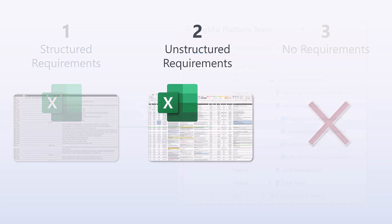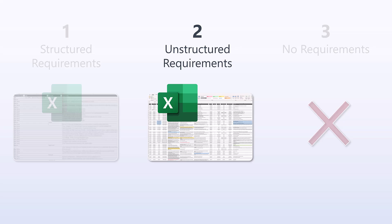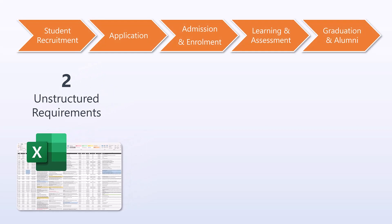Scenario number two is a little bit more complex. It's about a list of requirements you have received from your clients where either there is no categorization, or the categorization simply doesn't make sense. It happens that sometimes another BA or someone else worked on that list and categorized it based on previous experience in a way that doesn't really make logical sense. The example I'm sharing here is about implementing an IT platform for a higher education institution that will let them manage students, applicants, admissions, and the learning of applicants.